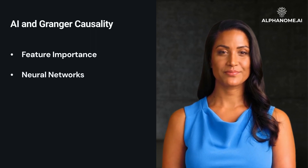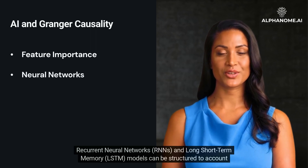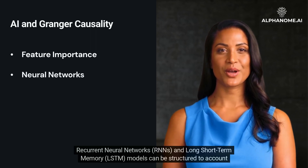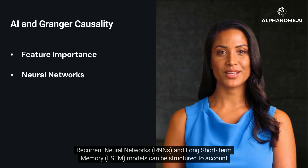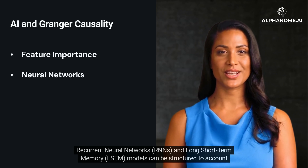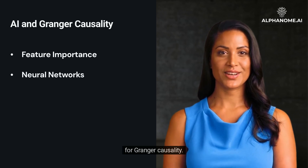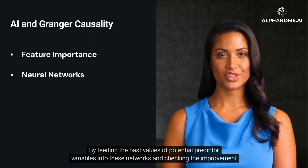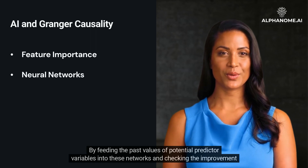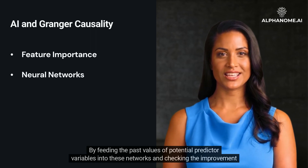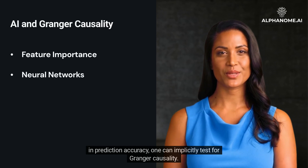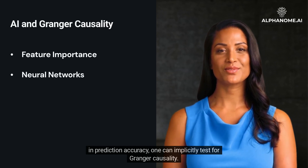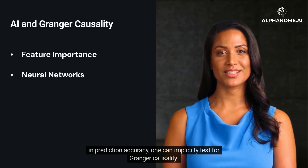Neural Networks: Recurrent neural networks (RNNs) and long short-term memory (LSTM) models can be structured to account for Granger Causality. By feeding the past values of potential predictor variables into these networks and checking the improvement in prediction accuracy, one can implicitly test for Granger Causality.